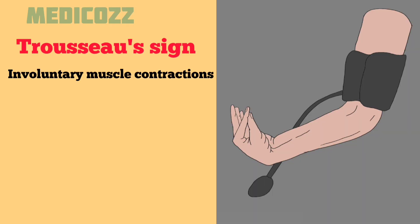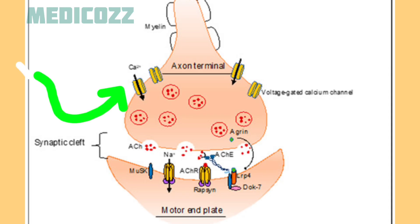Trousseau's sign is characterized by involuntary muscle contractions, particularly in the hands and feet, when the blood pressure cuff is inflated above the systolic pressure for several minutes. It is a result of neuromuscular hyper-excitability caused by low levels of calcium in the blood.